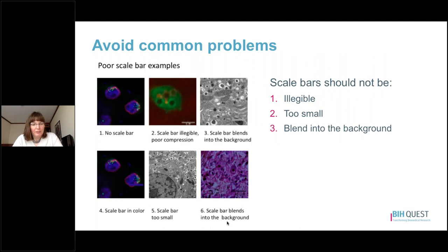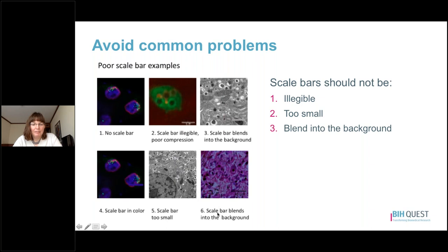Here are some common practices to avoid. The first image has no scale bar at all. In image two, the scale bar is present but blurry and illegible, perhaps due to compression problems. In the third case, the scale bar is gray on a black-and-white image with a lot of gray, so it blends into the background. In the fourth case, we have a dark blue scale bar blending into the black and blue of the image. In the fifth, the scale bar is so small it's very hard to see. In the sixth, we have a dark purple scale bar on a similarly dark background. Avoid scale bars that are illegible, too small, or that blend into the background.